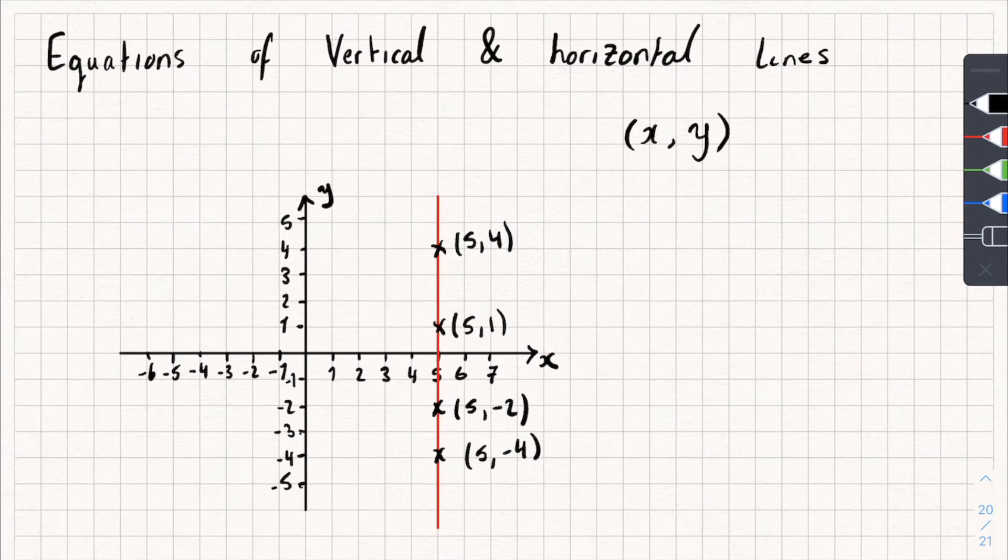Because no matter which point I pick on that line, the x-coordinate is going to be 5. So I could call this line x equals 5. And that is the equation of that line. That's how easy it is. Now, there's a rule as well, because in maths, there's usually a rule.